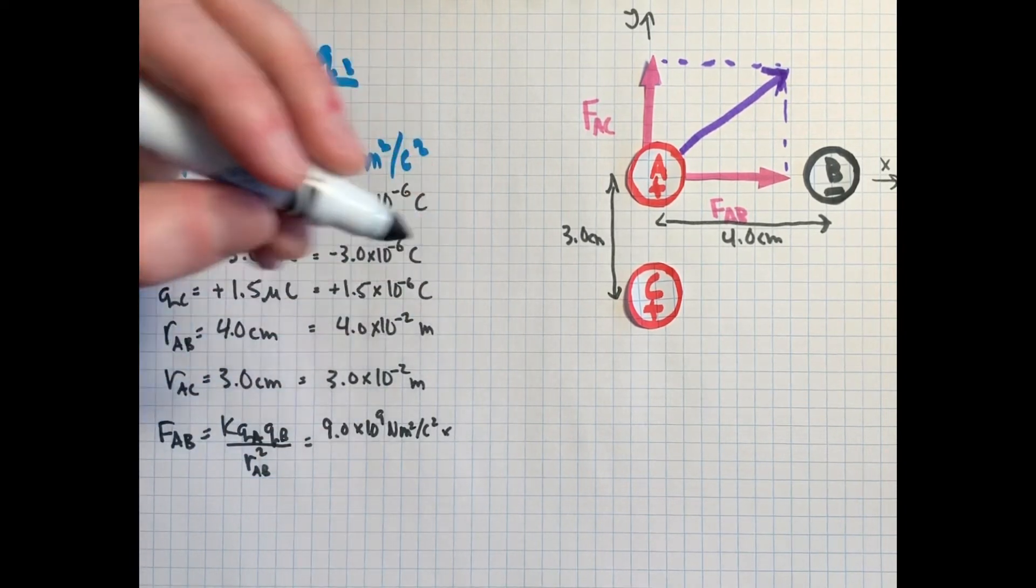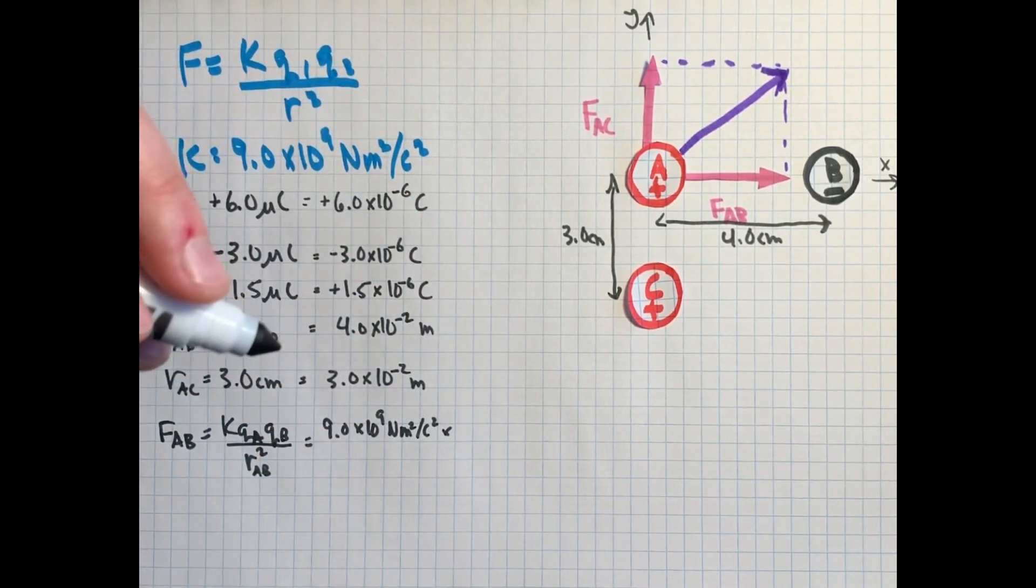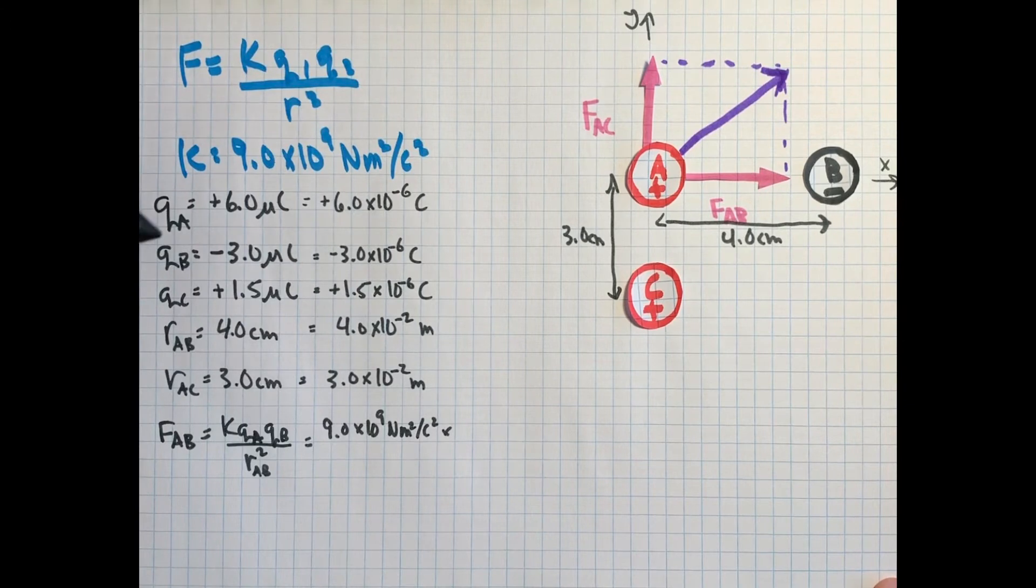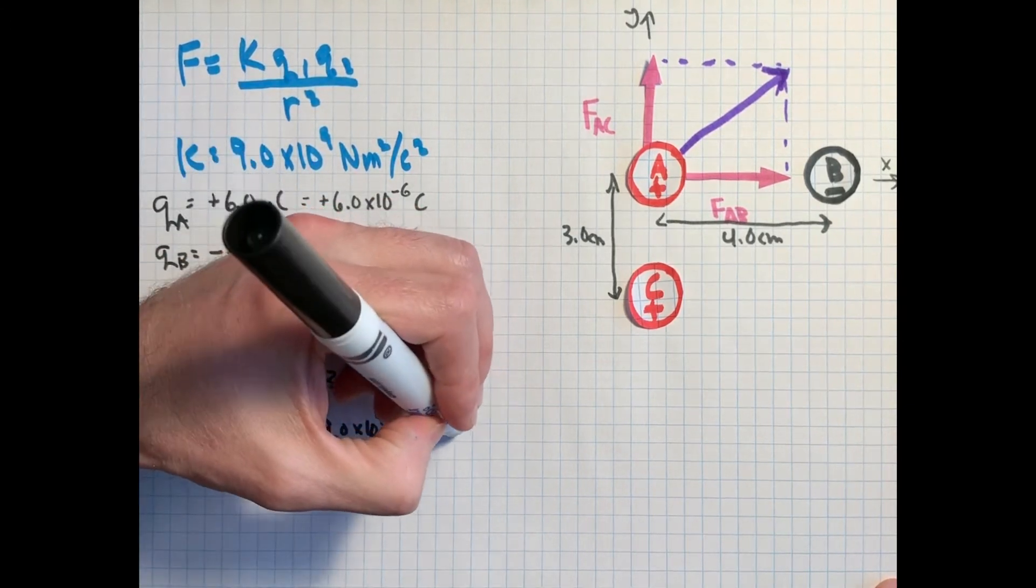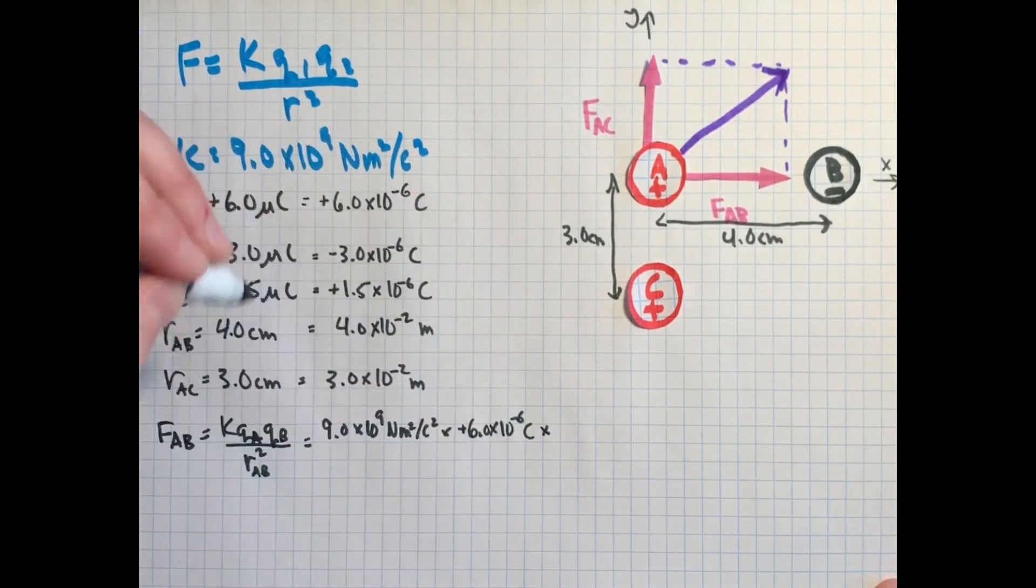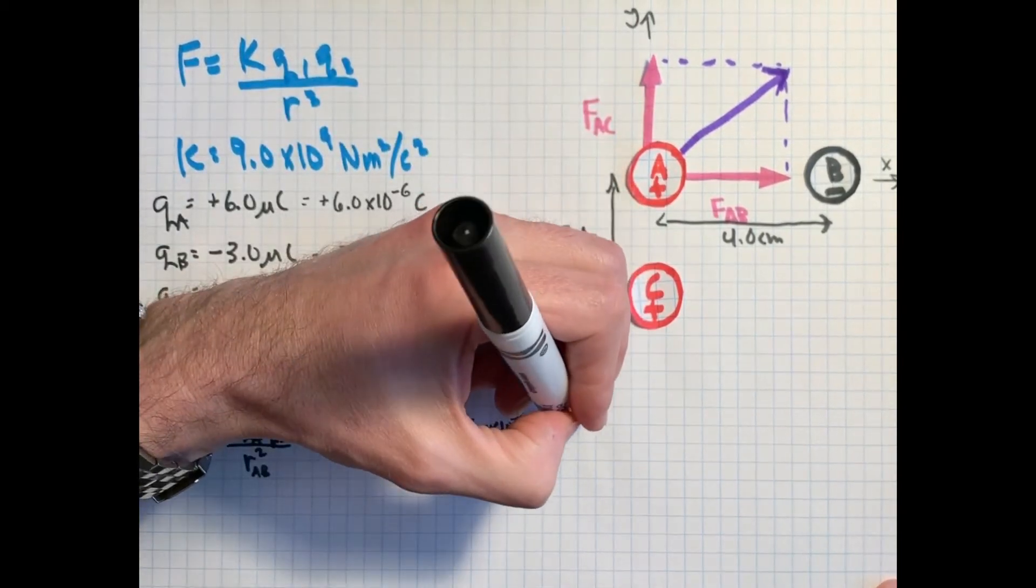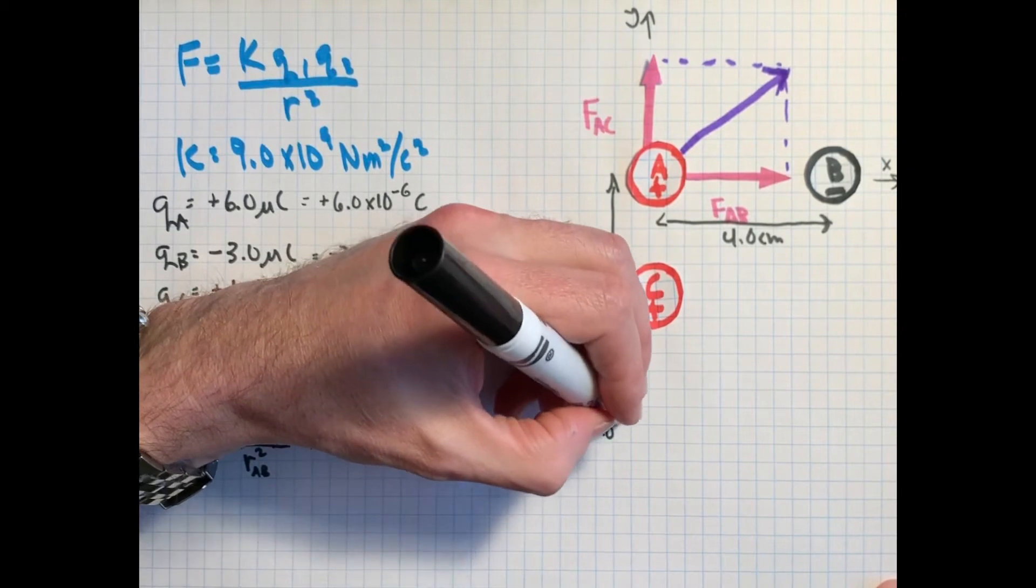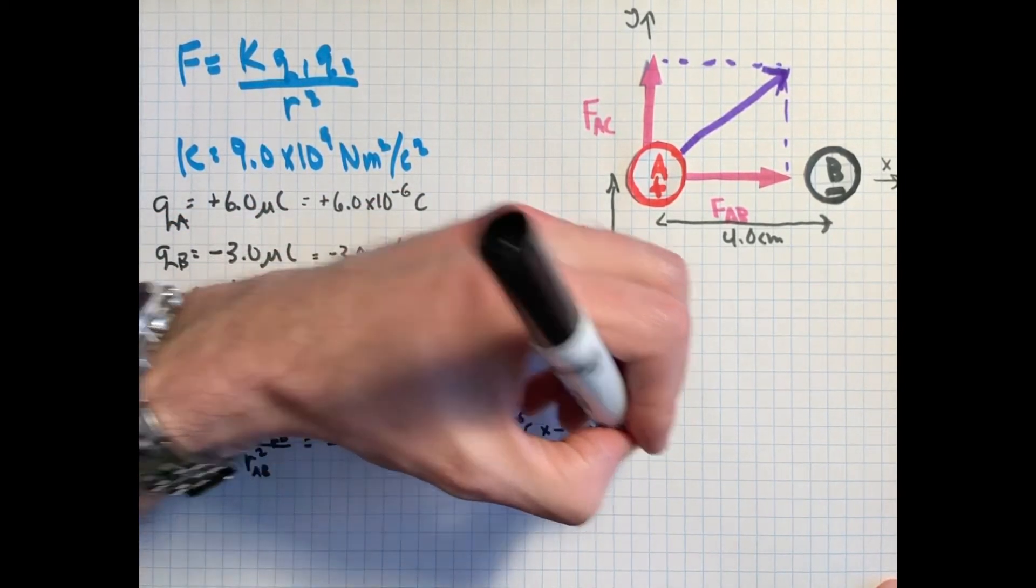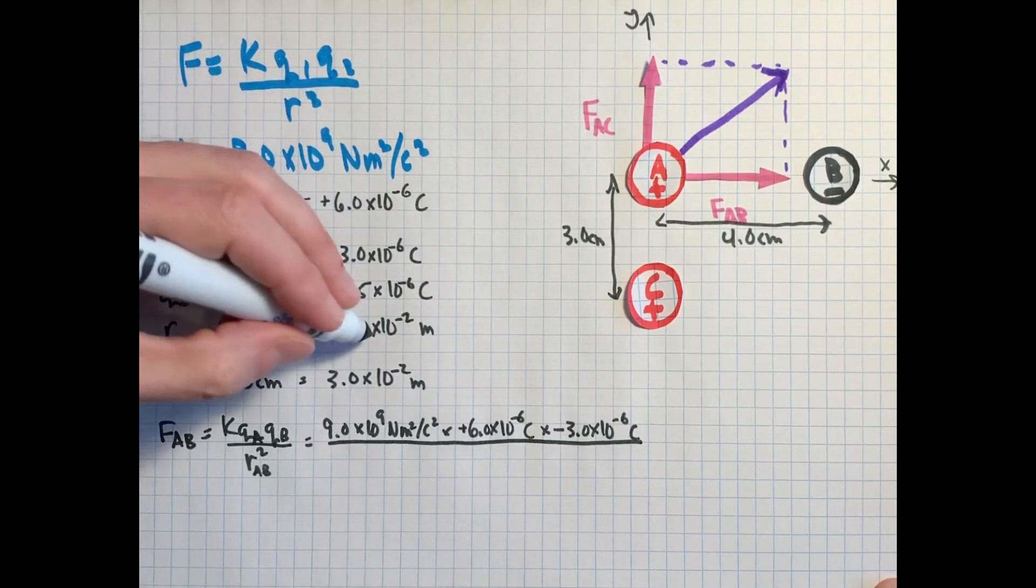And so we want our distances to be in meters and we want our charges to be in coulombs. So we recall that centimeters 100. So 4.0 times 10 to the minus 2 meters and 3.0 times 10 to the minus 2 meters. Now we're ready to really put these in. So just be careful with that, right? These things must be in coulombs and these things must be in meters because of the way K is expressed.